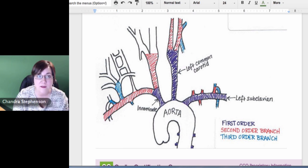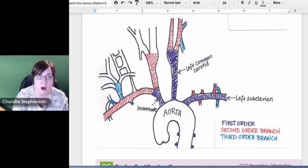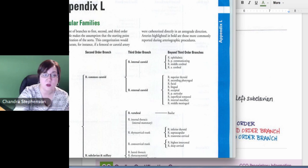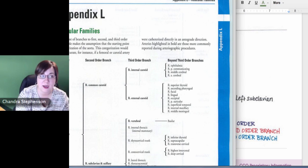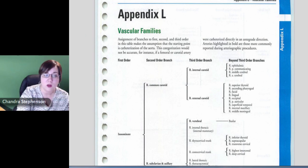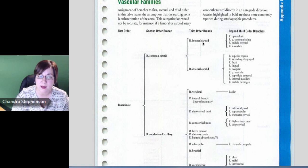For purposes of a cath, they never go beyond third order when we start talking about coding perspective. When you actually look at the codes, it says first, second, third or beyond. And that's what you'll see here when we start looking at Appendix L. They're giving you that same thing. They're saying we went in the innominate and then we branched off into the right common carotid and then we went into the right internal carotid. They're telling you how far they went.